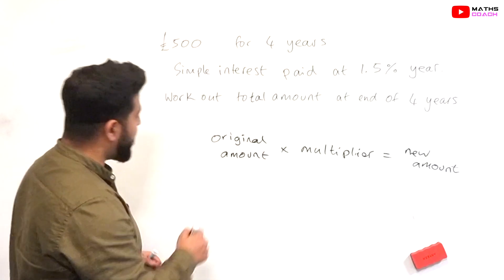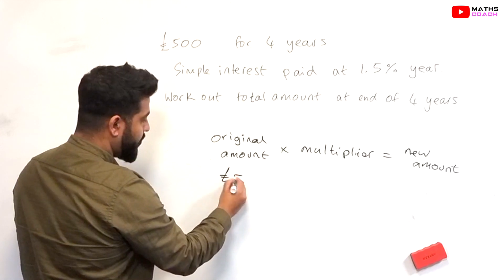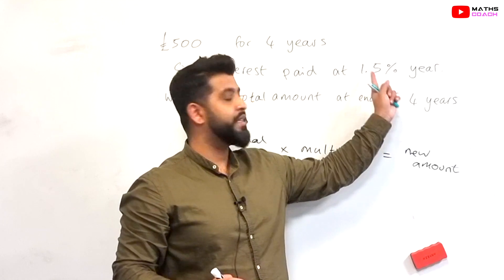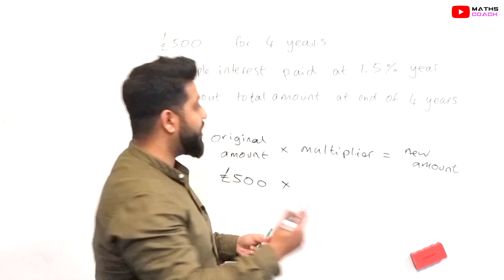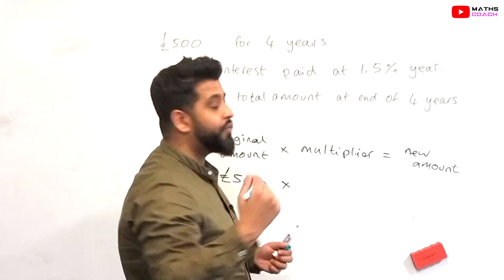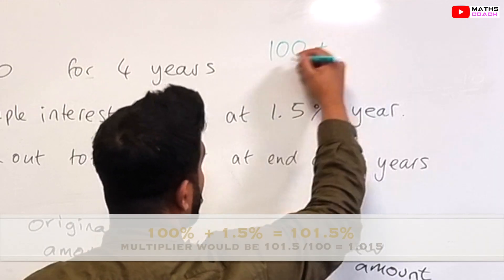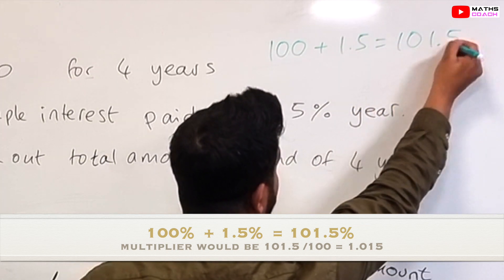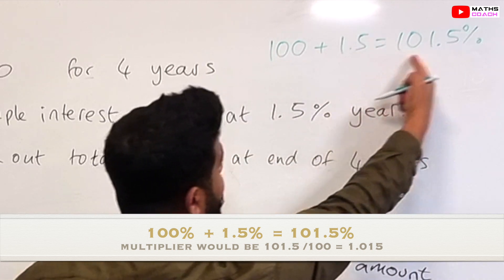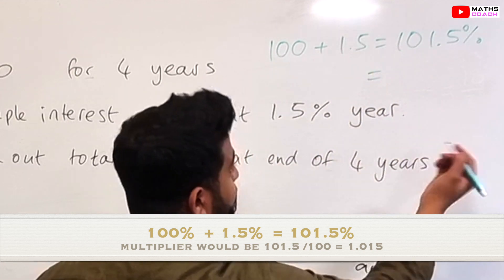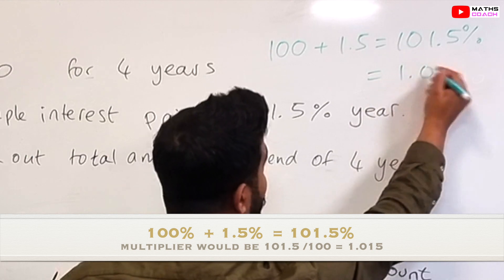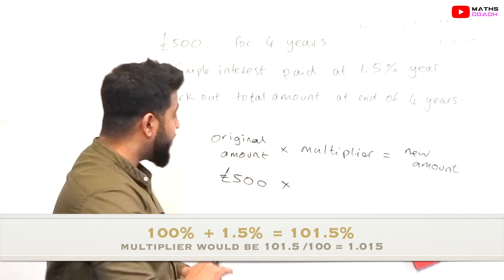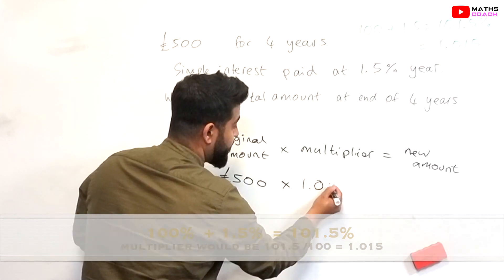Our original amount is £500. Our multiplier is based on 1.5% per year, so we add that 1.5% to 100, which gives us 101.5%. Then we divide by 100 to give us our multiplier: 1.015. So 1.015 becomes our multiplier.